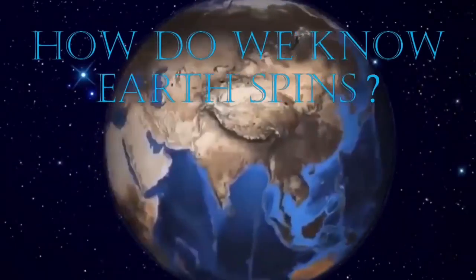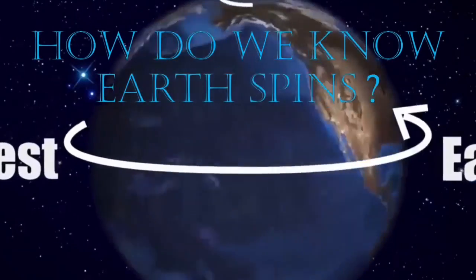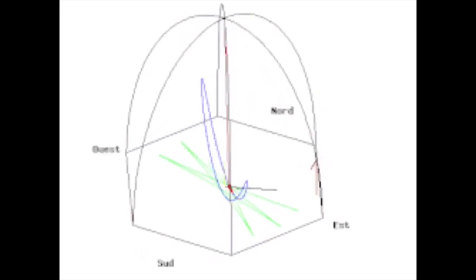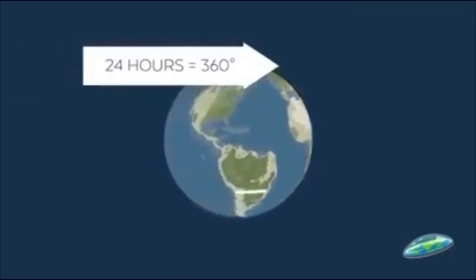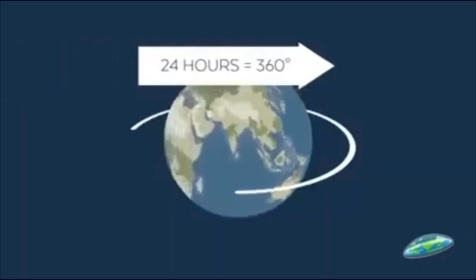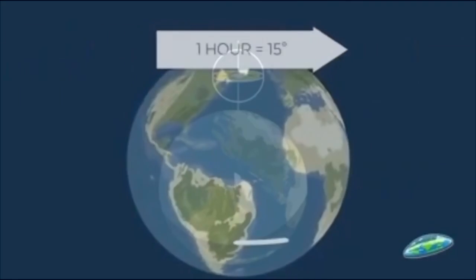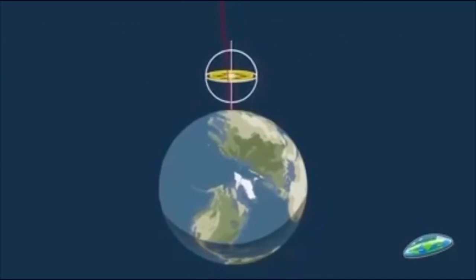How do we know Earth spins? Firstly, the Foucault pendulum. As the pendulum moves backwards and forwards, it's asserted Earth rotates underneath. So in 24 hours, the Earth must rotate 360 degrees, which is 15 degrees per hour.